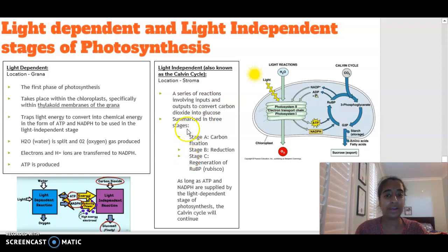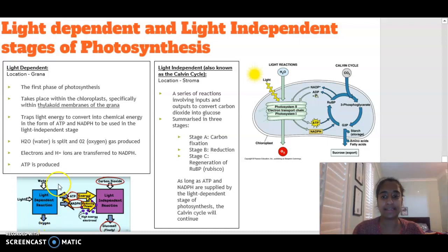There are three stages of the light-independent stage, and after these three stages, we are going to end up with an output of glucose. So in terms of this phase here, we've got our inputs from the light-dependent stage, so our ATP and NADPH, we have an input of carbon dioxide, and our output is going to be glucose as our final production.